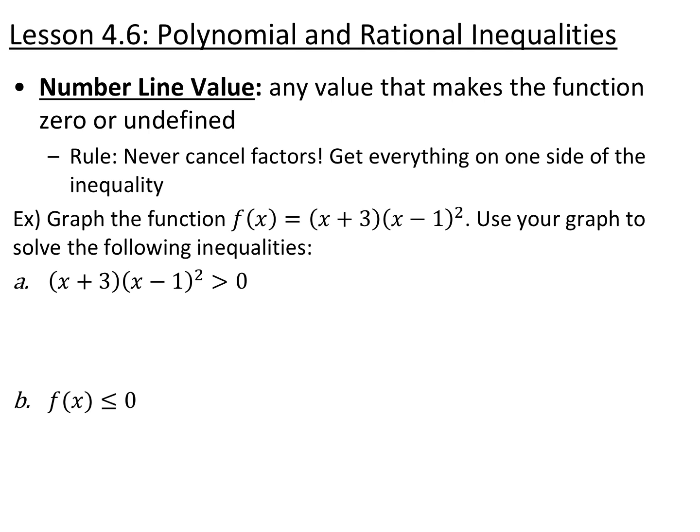For the rational functions, make sure you never cancel any factors. We're going to get everything on one side of the inequality, and then we're going to solve it. So first, we're going to graph this function f of x equals x plus 3 times x minus 1 quantity squared, and then use our graph in order to answer these questions.